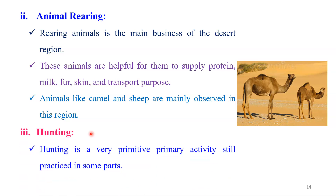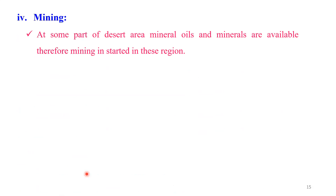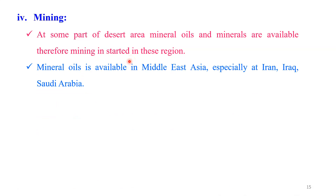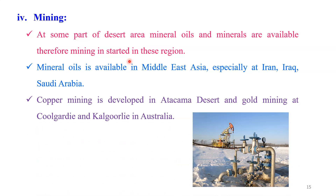Hunting is another important occupation that we observe in this area. Hunting is a very primitive primary activity, still practiced in some part of the world. The grasslands were famous for hunting grounds. The mining is also one important economic activity of human beings that we observe in the desert region. At some parts of the desert area, minerals are available. Therefore, mining is started in this region. Oil mineral is available in the Middle East, especially in Iran, Iraq, and Saudi Arabia, and therefore mining activity has flourished. Copper mining is also developed in the Atacama Desert, and gold mining is also famous in Australia.